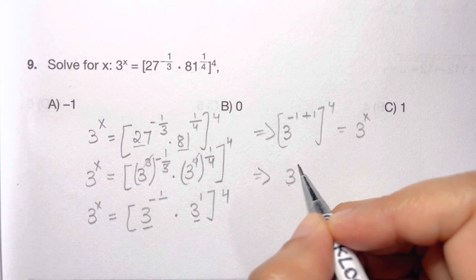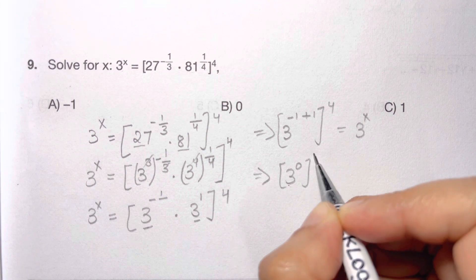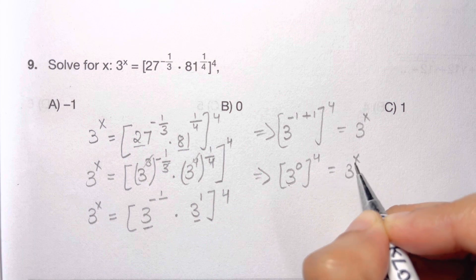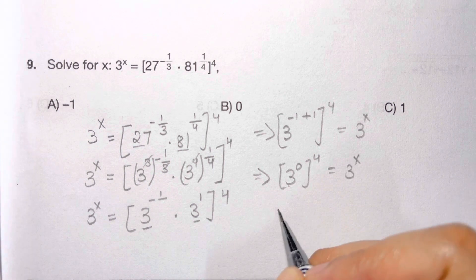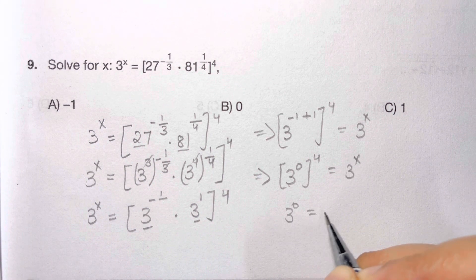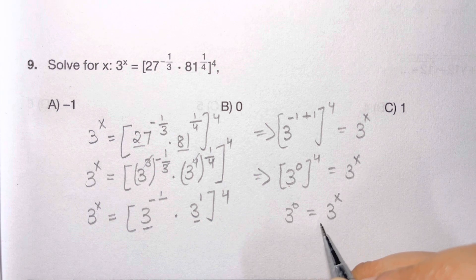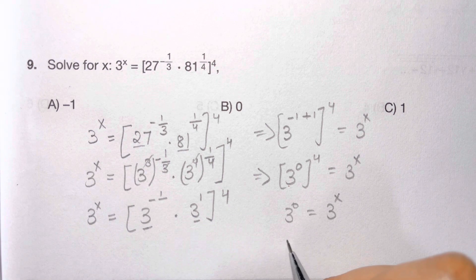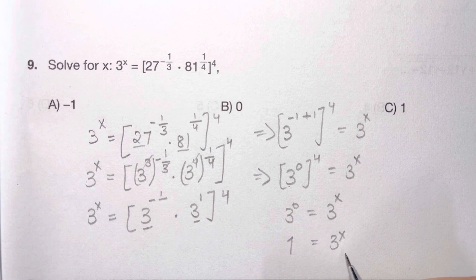3 to the power of minus 1 plus 1 is 0. 3 to the power of 0, whole to the power of 4, is 3 to the power of x. 0 times 4 is 0, which equals 3 to the power of x. And anything to the power of 0 is 1, so 3 to the power of x equals 1.